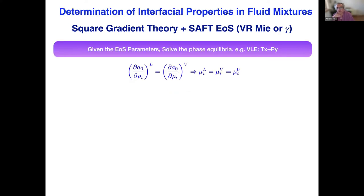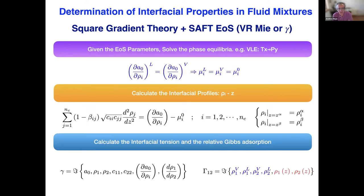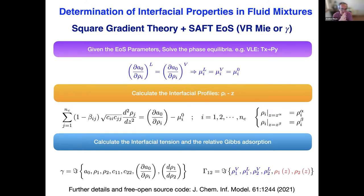In order to apply this expression, we follow the following procedure: given the EOS parameters, we solve the phase equilibrium, and with this information we calculate the surface tension profile by solving this differential equation. Using the interface profile, we calculate the surface tension or the relative Gibbs adsorption, depending on what we are looking for. An open source Python code described in the reference at the bottom of the page allows prediction from square gradient theory, with several examples included for users.